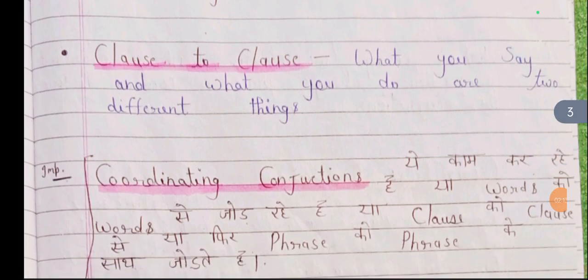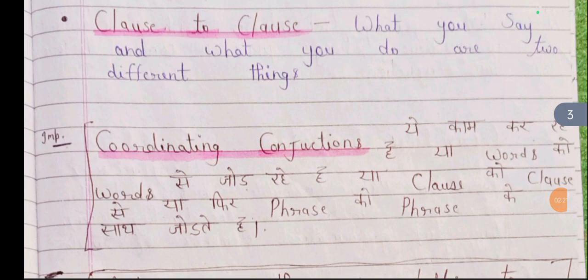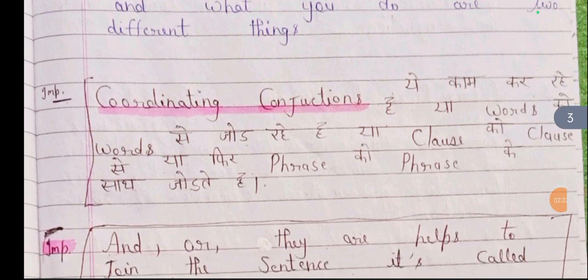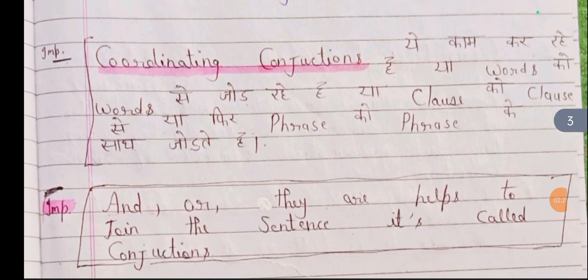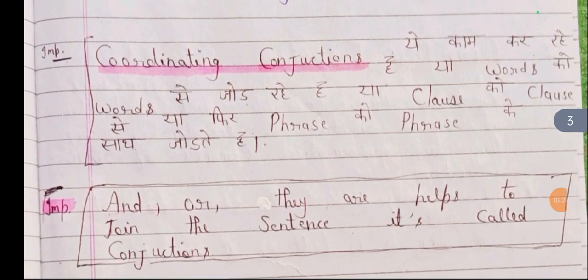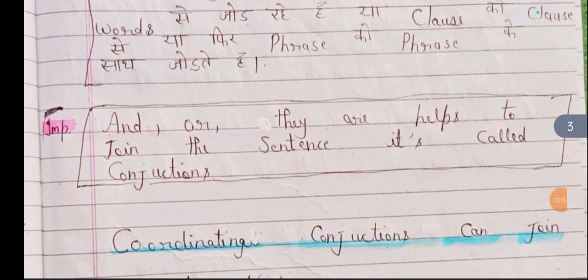Clause to clause: 'What you say and what you do are two different things.' These are two clauses that have been joined together. Coordinating conjunctions join word to word, clause to clause, or phrase to phrase — they help join sentences together. That's called a conjunction.